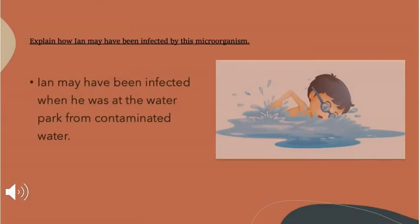The question asks to explain how Ian may have been infected by this microorganism. Ian may have been infected when he was at the water park, swimming in contaminated water.